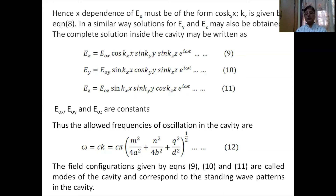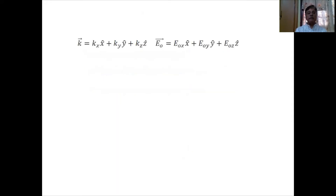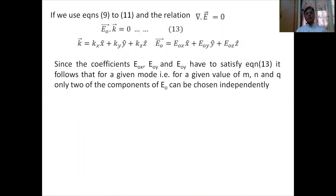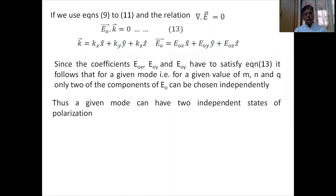The field configurations given by these equations are all modes of the cavity and correspond to standing wave patterns. Applying the divergence condition ∇·E=0 gives E·K=0, meaning E0 is perpendicular to K. Since E0x, E0y, E0z must satisfy this constraint, for a given mode (given M, N, Q), only two components of E0 can be chosen independently — the third follows automatically. Thus a given mode has two independent states of polarization.